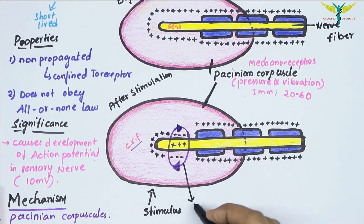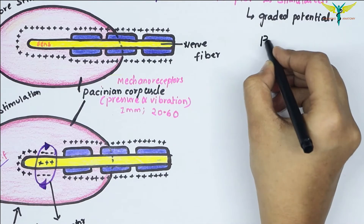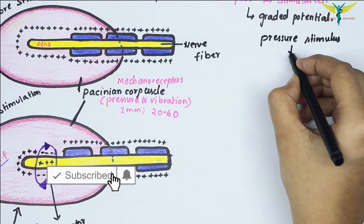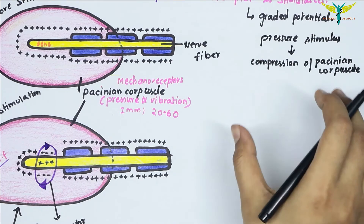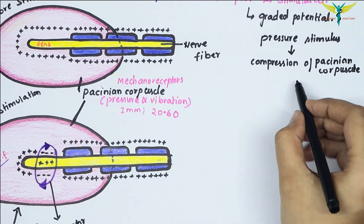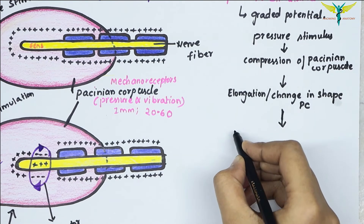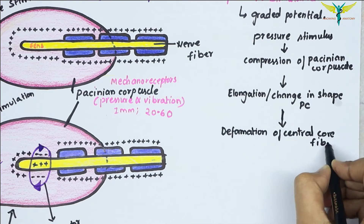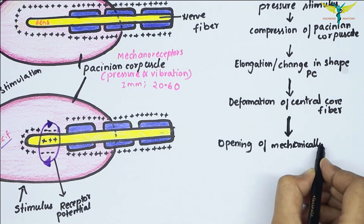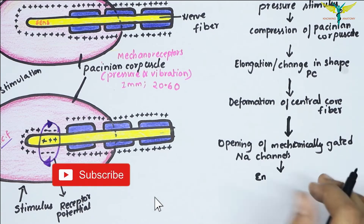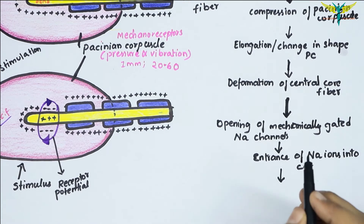Here is a flow chart of the receptor potential mechanism: pressure stimulus → compression of the Pacinian corpuscle → elongation or change in shape of the Pacinian corpuscle → deformation of the core fiber → opening of mechanically gated sodium channels → entrance of sodium ions into the core fiber → development of the receptor potential.